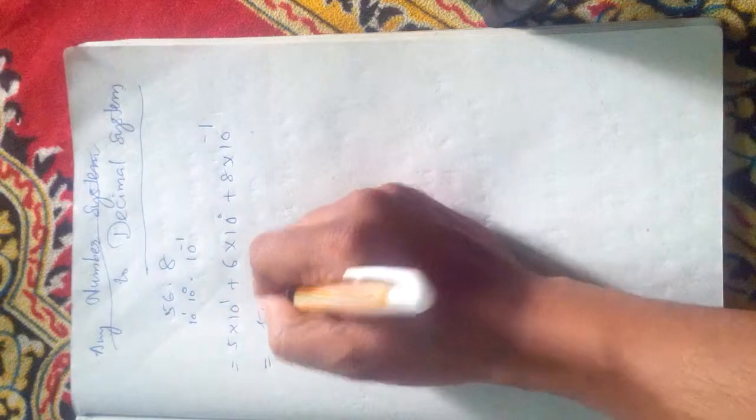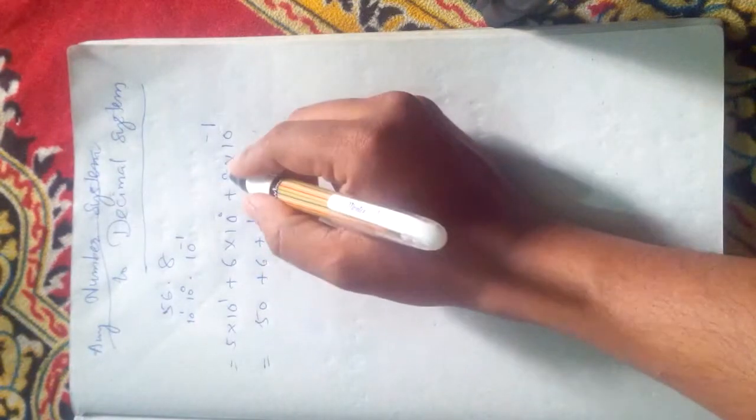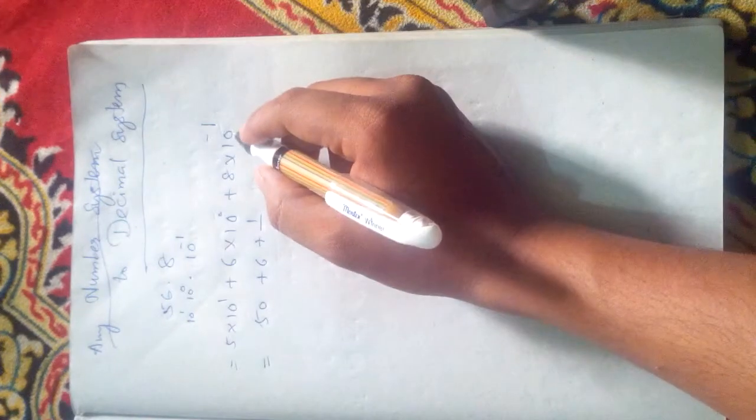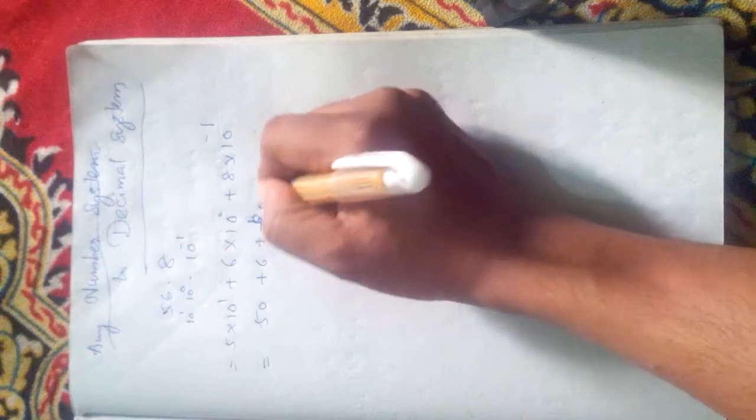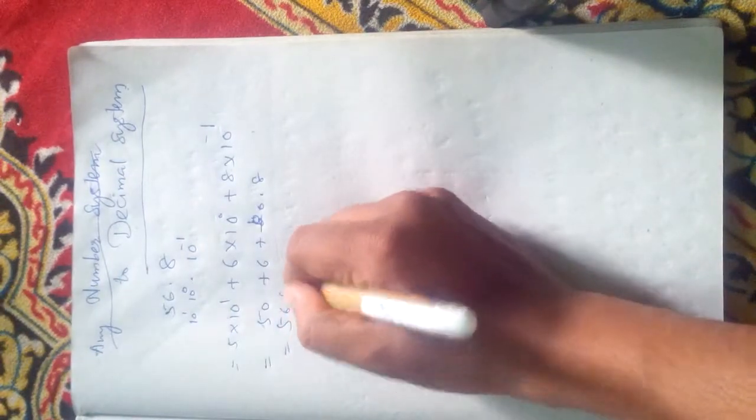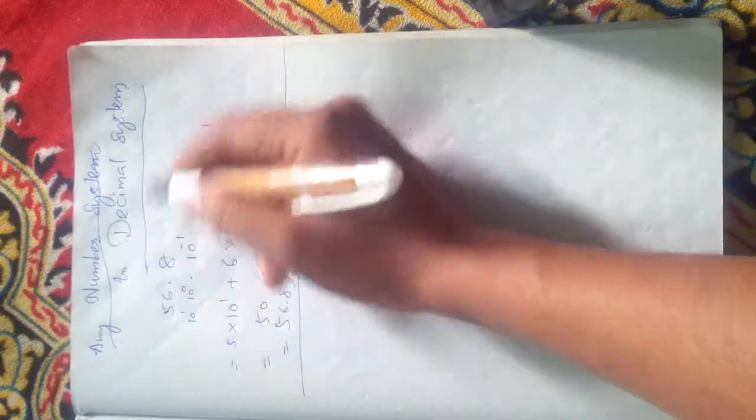So this is 56 and this one is 0.8, which equals 56.8. Again, we are getting back to 56.8. This is how we can convert.